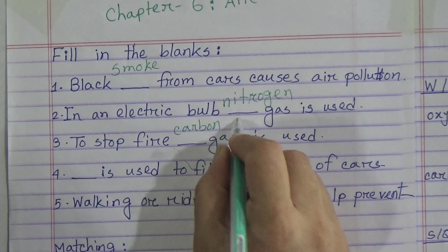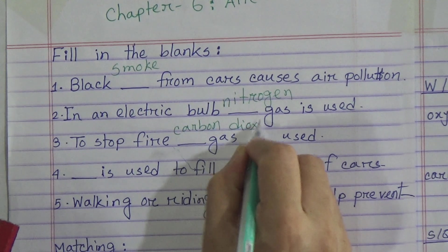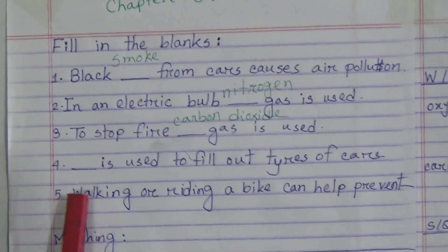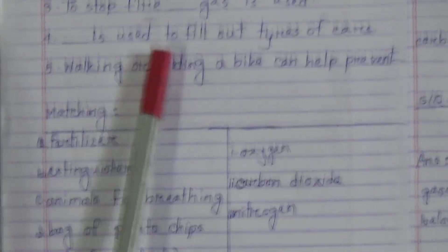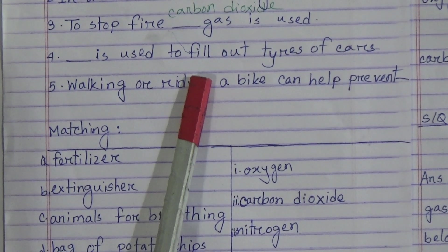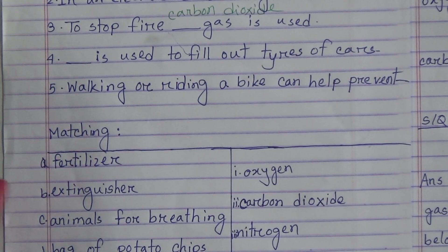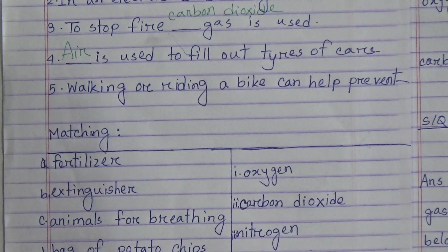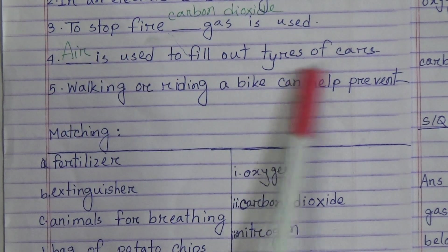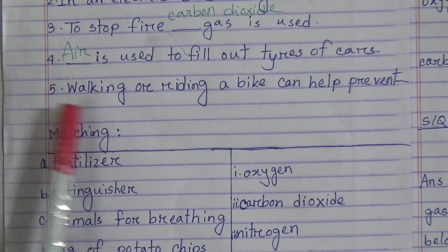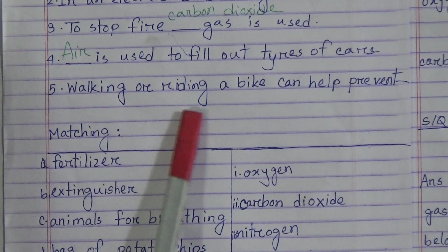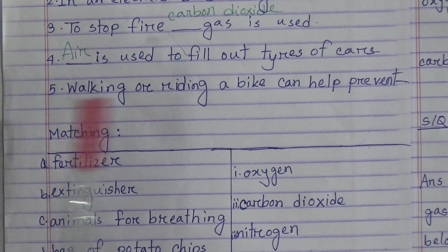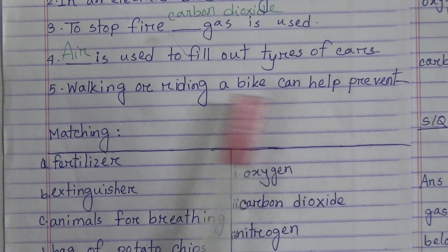Number four: dash is used to fill out tires of cars. Air is used to fill out tires of cars. Number five: walking or riding a bike can help prevent dash. The answer is air pollution. Write 'air pollution.'